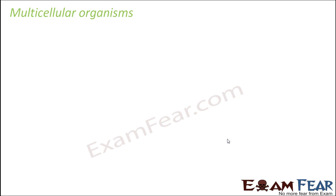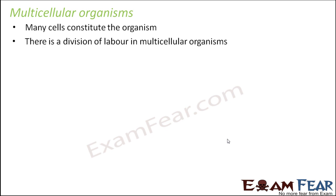That was about unicellular organisms. Now let us talk about multicellular organisms. In these organisms, many cells constitute the organism — the best example is human beings. One important characteristic feature of multicellular organisms is division of labor. This is the concept where all the cells in the living organism do not perform the same function. A group of cells performs one function, another group performs another function, and so on.